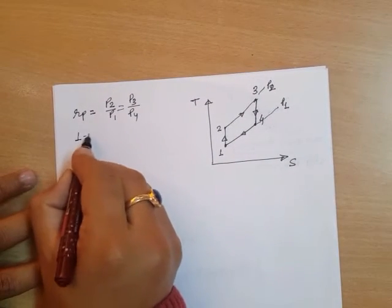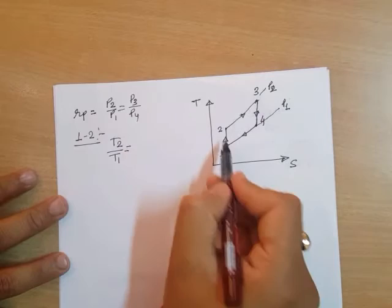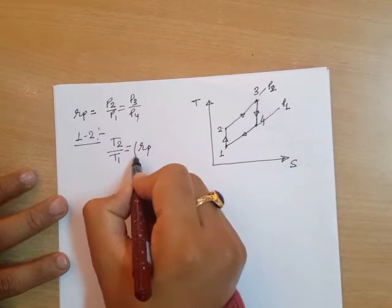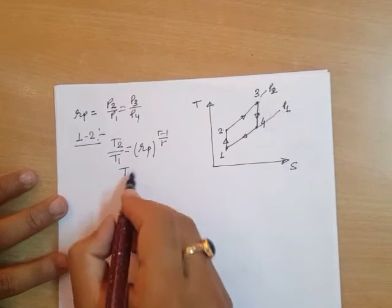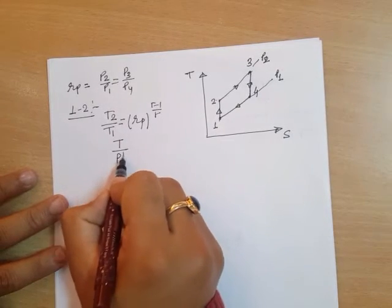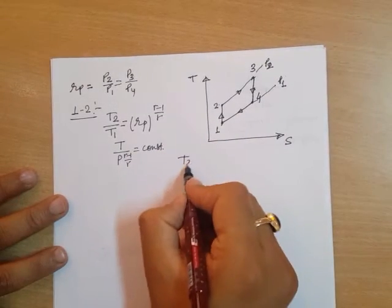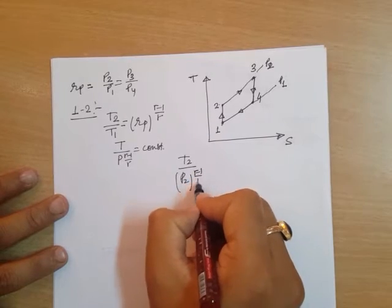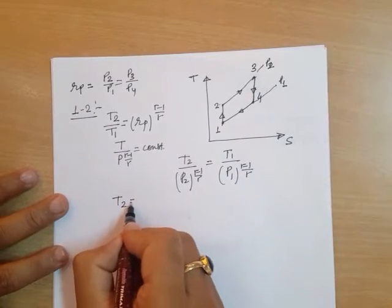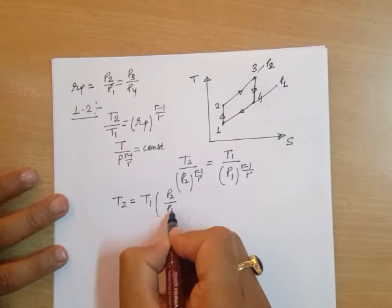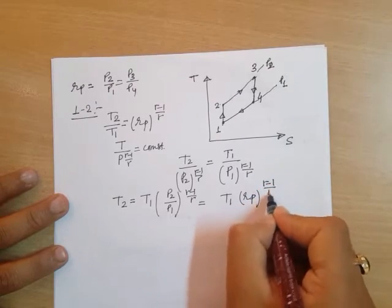For the isentropic process 1 to 2, we know that T/(P^((γ-1)/γ)) is constant for an adiabatic process. Therefore T2/P2^((γ-1)/γ) = T1/P1^((γ-1)/γ), which gives T2 = T1·(P2/P1)^((γ-1)/γ) = T1·RP^((γ-1)/γ).